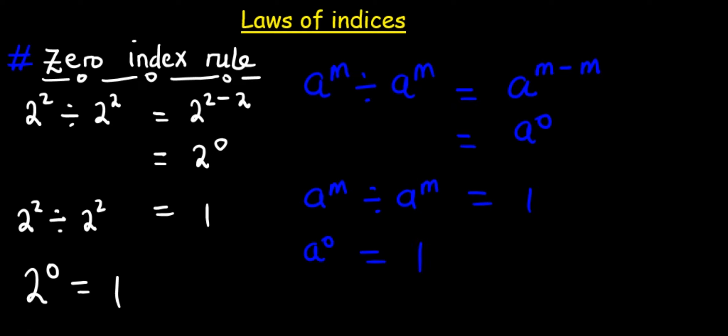Now we need to note something. Whenever we power any number with 0, the result is equal to 1. For example, in example number 1, 2 raised to power 0, the answer was 1. In example number 2, a raised to power 0, the result was 1.